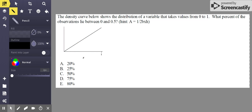This problem is about density curves and understanding how to find the proportion of a density curve. So let's read it. The density curve below shows the distribution of a variable that takes values from 0 to 1. What percent of the observations lie between 0 and 0.5?